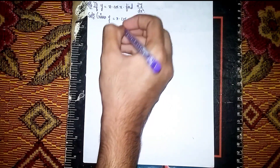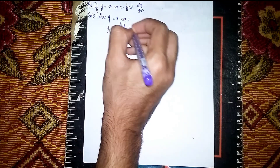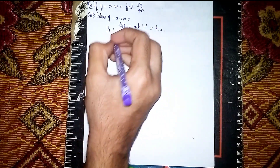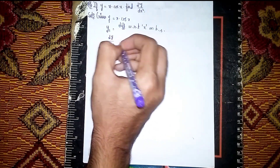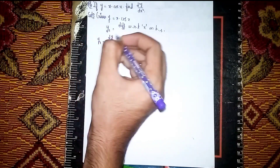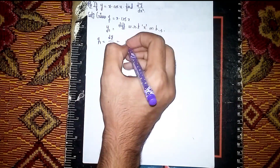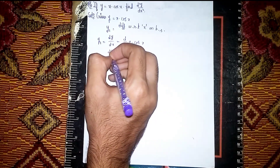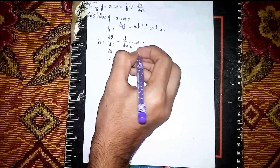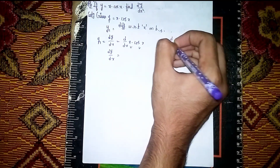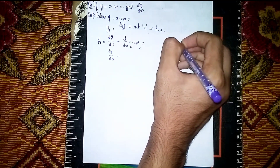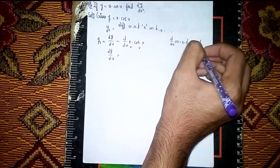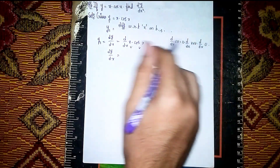Let's consider the first differentiation as y1. Differentiate with respect to x on both sides, so dy by dx is equal to dy by dx of x into cos x. Now I am using the product rule — also called the UV rule. The formula is: d/dx of uv is equal to u into d/dx of v, plus v into d/dx of u.